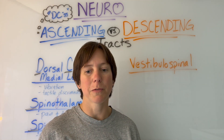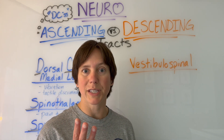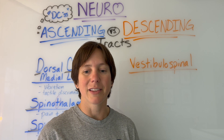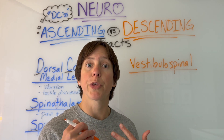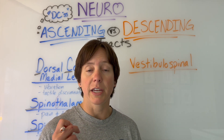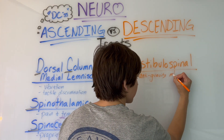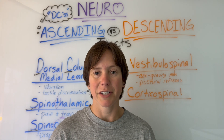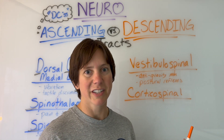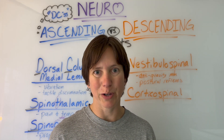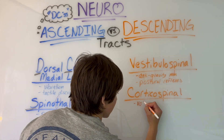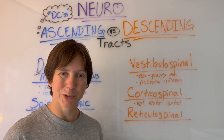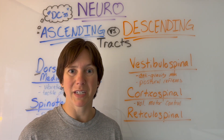Next we'll go over the descending tracts. The first is vestibulospinal, which helps with your antigravity muscles and postural reflexes. The second is the corticospinal tract, which helps with voluntary motor control. The last descending tract is the reticulospinal tract, known for transmitting pain.